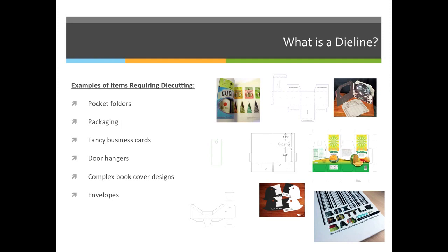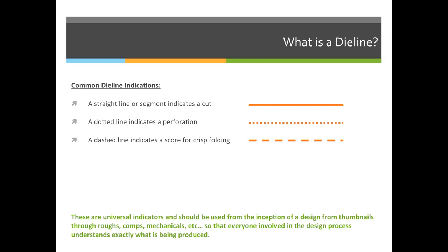Some standard things that require die cutting all the time are pocket folders, packaging, fancy business cards, door hangers, complex book cover designs, and envelopes. A lot of people don't think about envelopes being die cut, but they are. If you rip an envelope open at the seams, you'll see a very distinct outline or shape. Common die line indicators you should write down: a straight line indicates a cut, a dotted line indicates a perforation, and a dashed line indicates a score for folding — called die scoring. When you create your die line for this week's homework, make sure any line that should be cut has a straight line, any line that should be folded has a dashed line, and if something should be perforated, use a perf line.